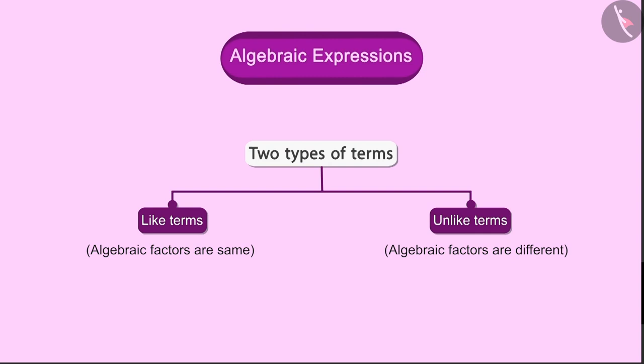Let us understand it with the help of examples. Suppose 7xy and 15xy are two terms. Are they like terms or unlike terms? Remember, in order to know the type of term we have to see their algebraic factors, in other words the variables, and not the numbers. X and y are the algebraic factors of these two terms, hence we can say that they are like terms.